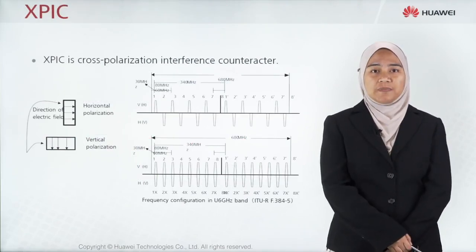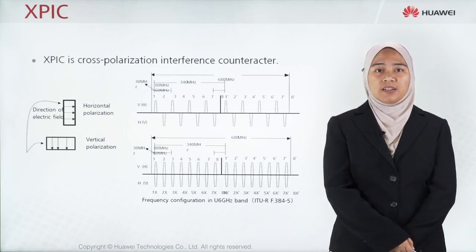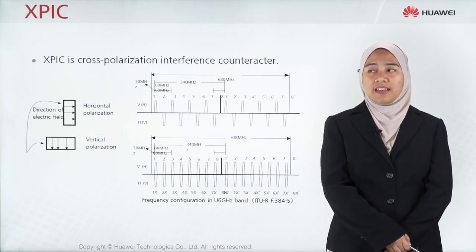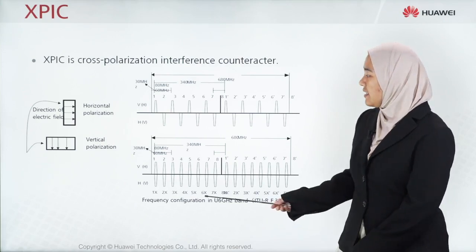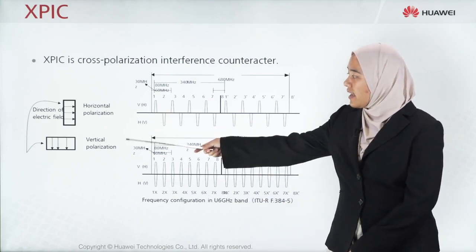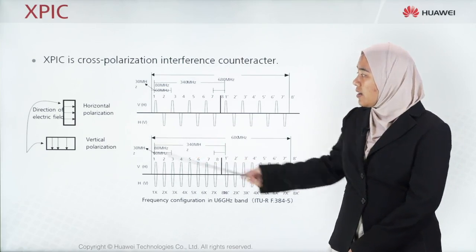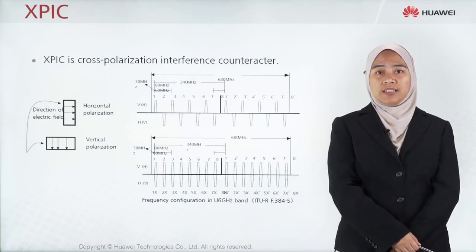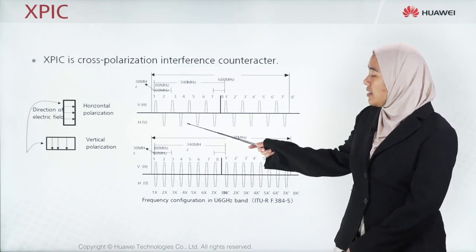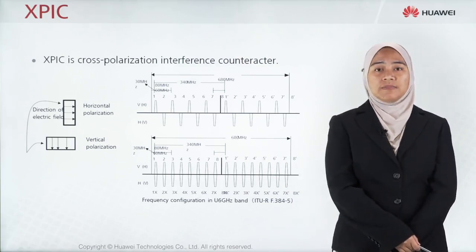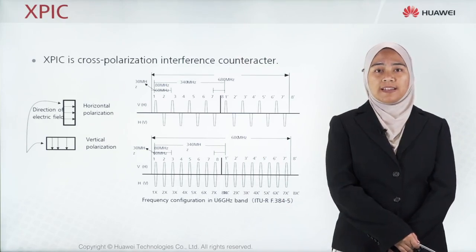Next is XPIC — cross-polarization interference counteractor. As shown in this figure, there is horizontal polarization and vertical polarization. When two signals use the same frequency, to avoid interference between the horizontal and the vertical polarizations, we can use XPIC.